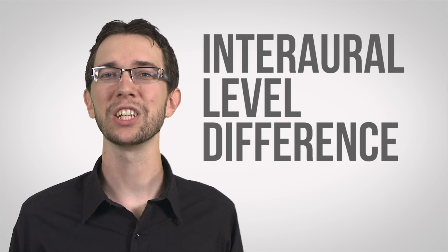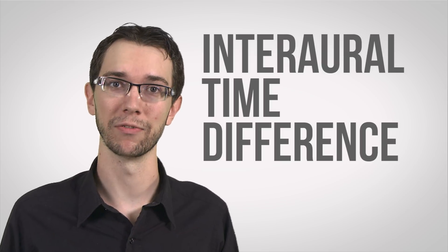It's these slight differences in timing and volume that tell you what direction a sound is coming from on the x-axis. This is called the interaural level difference and interaural time difference.